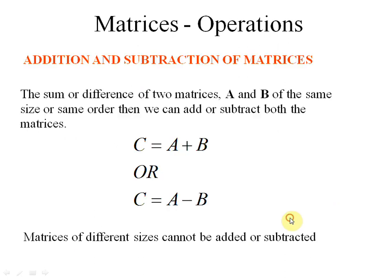Next, move on to addition and subtraction of matrices, which is very easy. The only condition is that the sum or difference of two matrices A and B requires both to be of the same size or same order. If the order of both A and B is the same, we can add or subtract them. Note that matrices of different sizes cannot be added or subtracted.